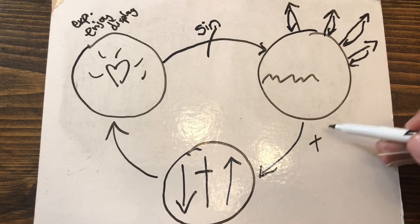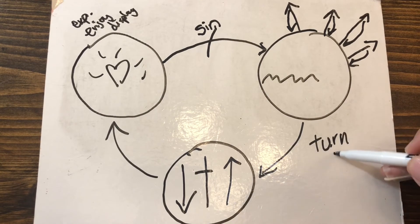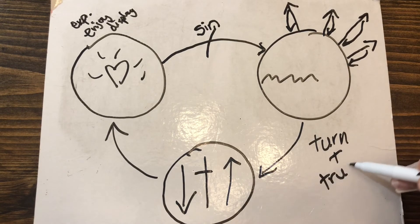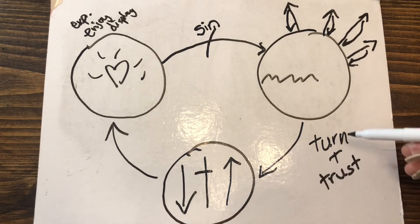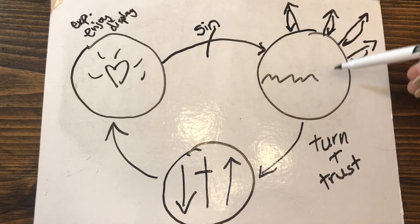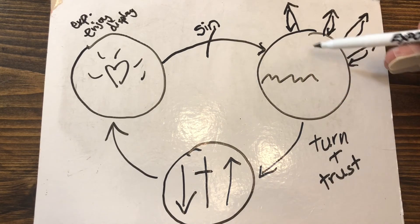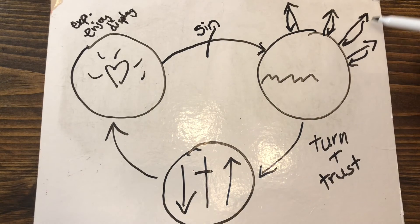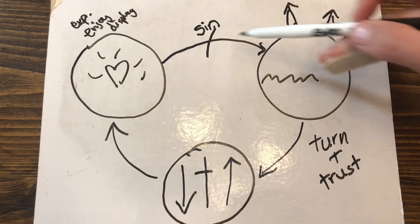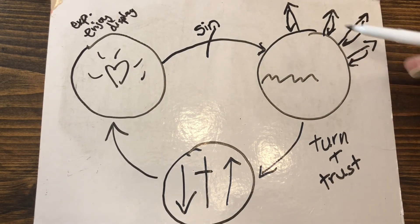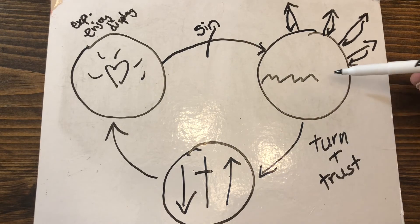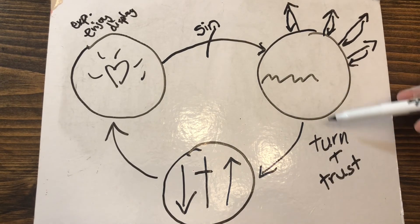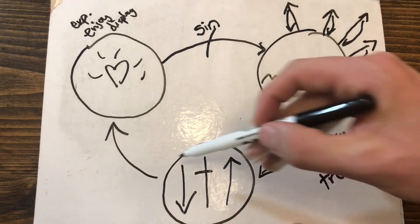In scripture it says that if we turn and trust in Jesus as our Lord and Savior—what am I turning from? I'm turning from a life of living things my own way. I'm turning from a life of sin. I'm turning from trying to do things in my own strength, trying to escape this and the penalty of sin in my own ways. I have to turn from those, repent, confess of the sin in my life.